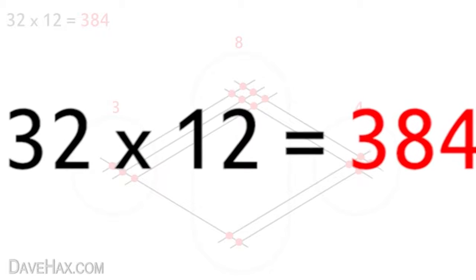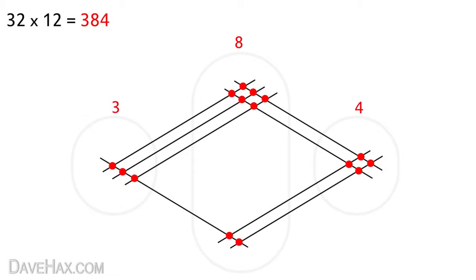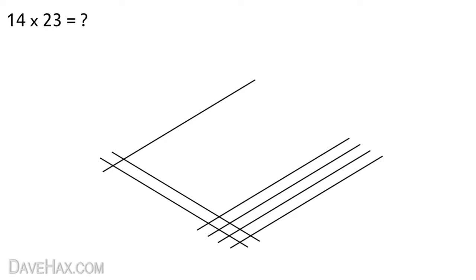But it does get a little more complicated if we add more lines. I'll show you. Let's multiply 14 by 23. So draw out the pattern. 1 4. 2 and 3. Mark out our zones and now let's count the dots.